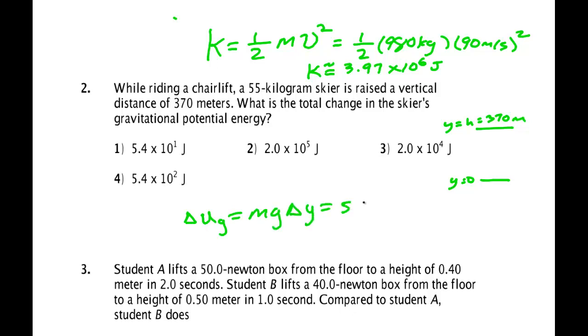So change in gravitational potential energy is equal to mg times the change in y. I've got 55 kilograms, 9.8 meters per second squared, and I'm raising it 370 meters. So delta UG is approximately about 2.0 times 10 to the fifth joules. I actually got 1.99. So it's this one right here.